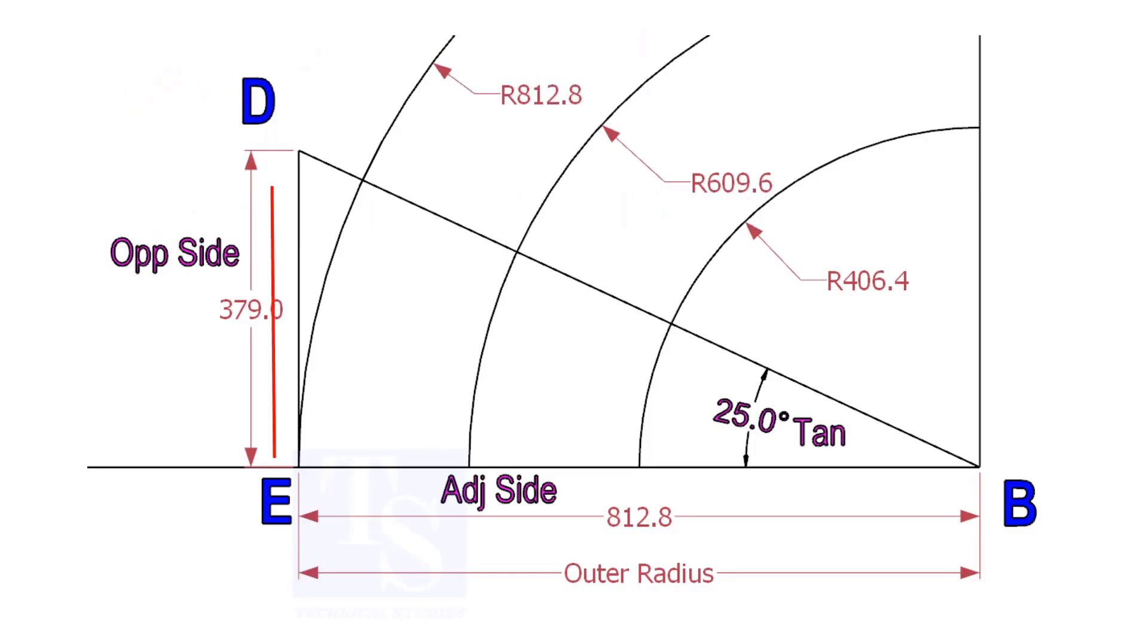Draw the line ED vertically and the slant line DB. I hope now you will be able to draw a line in any degree.